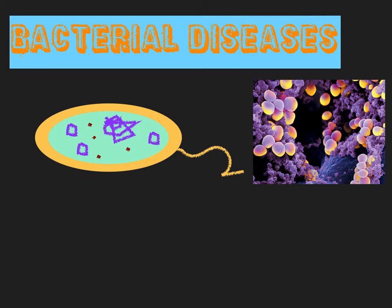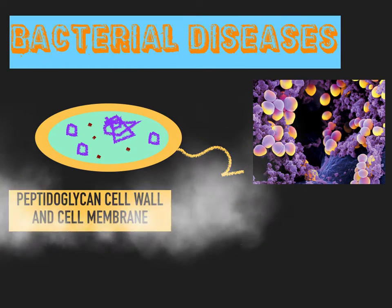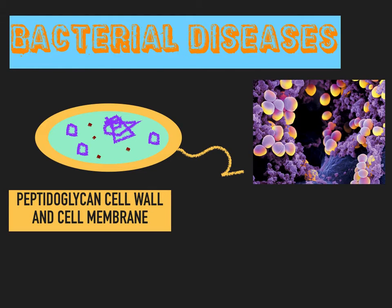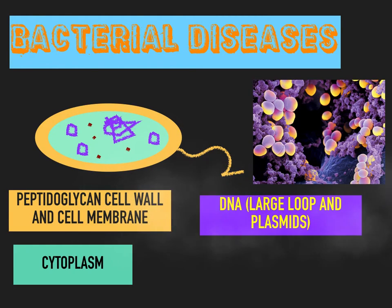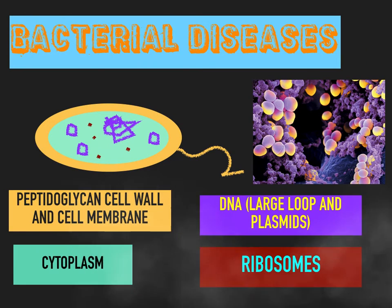For bacterial diseases, let's have a quick look at a bacterial cell. Around the outside of the cell you have the cell wall — in bacteria this is made from peptidoglycan. Just inside that you've got a cell membrane. In the interior of the cell you have the cytoplasm where all the chemical reactions take place. You have two types of DNA: a large loop of DNA which contains most of the genetic material, and plasmids — small loops of DNA which can be swapped between bacteria to exchange genes. And finally, the little red splodges there are the ribosomes, which are the protein factories of the cell where protein synthesis takes place.